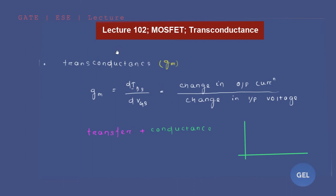Welcome to GATE ESE lecture, number 102, module 7 — MOSFET. Now we're going to understand a beautiful concept: transconductance. We have heard this term in JFET, and in MOSFET, GM is also the change in output current to the change in input voltage. So GM, transconductance, equals the ratio between change in output current to the change in input voltage.